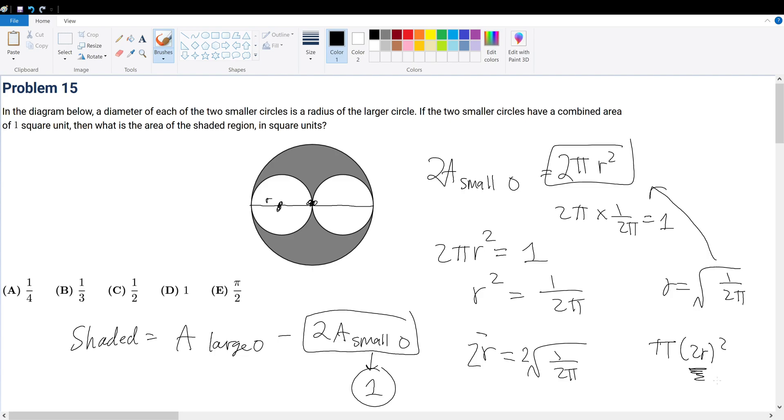Because remember, 2r gives the diameter. Or no, no. 2r gives the radius of this segment. Two times r gives you this length, and that length is the radius. So that's why we have 2r here and we square it.